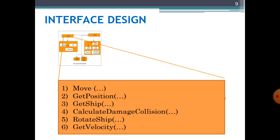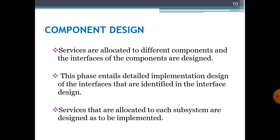Here in this slide, we see how to build a client interface for our Null Space Game Shooter, building these six different functionalities. The next level of design is component design. As discussed earlier, component design provides services by allocating different services to components and designing the interfaces of these components. In other words, it decomposes subsystems into components, allocates different services to those components, and provides interfaces to them. This phase provides us detailed implementation about the design of interfaces identified in the previous interface design phase.